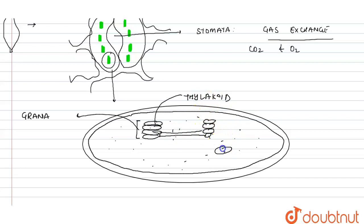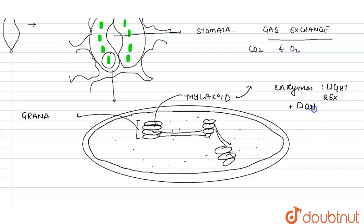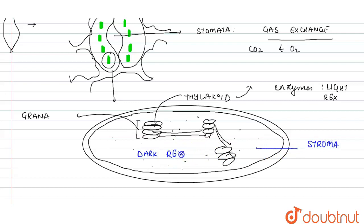The thylakoids are attached via a lamella — a membrane that connects them. In the lamella and thylakoids, the enzymes for the light reactions of photosynthesis are present. The dark reactions take place in the stroma of the chloroplast, where the enzymes for dark reactions are found.